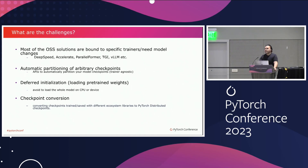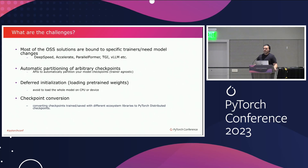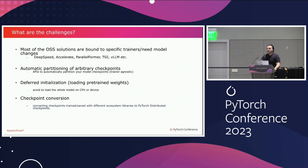To highlight some of the challenges in distributed inference: first, most of these OSS solutions are bound to specific trainers or need model changes — like DeepSpeed, Hugging Face Accelerate, Parallel Former, TGI, VLLM, etc. This calls for a solution that can automatically partition your model from an arbitrary checkpoint, so it doesn't matter which trainer you used to train your model.